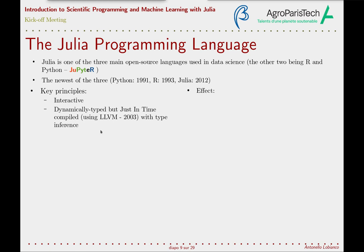For example, if you write x equals 1.5, you don't need to declare that x is a float — this information is inferred from the fact that you typed a float. The technology behind this just-in-time compilation comes from the underlying compiler that Julia uses, namely LLVM. Just-in-time compilation has been a very important progress in the IT industry, and LLVM became available in 2003.